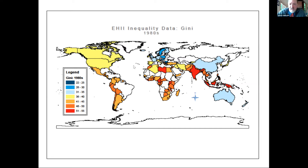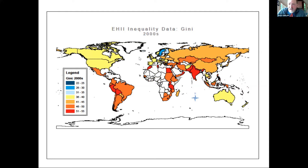Countries near to each other should have and do have relatively similar measures — which given porous borders and interconnections should not be a surprise. In the 1970s, inequality is already rising in the United States. It rises in the 1980s, and in the 1990s the picture changes as the Soviet space comes into the data. In the 2000s, with the exception of a number of Northern European countries, basically the whole world has the inequality coloration of the non-Western world in the 1960s — the stretch between wealthy and less wealthy is comparable to what was characteristic of the developing world 50 years previously.